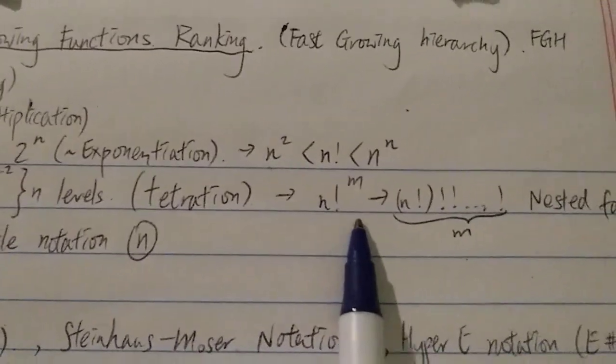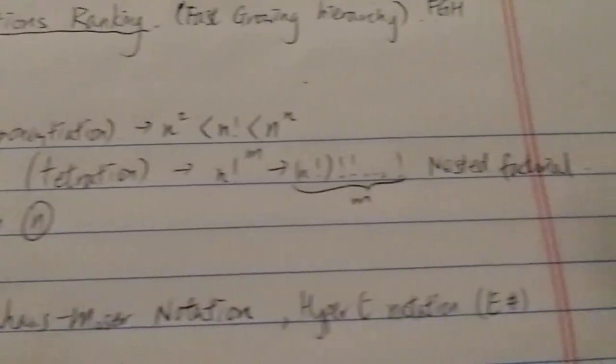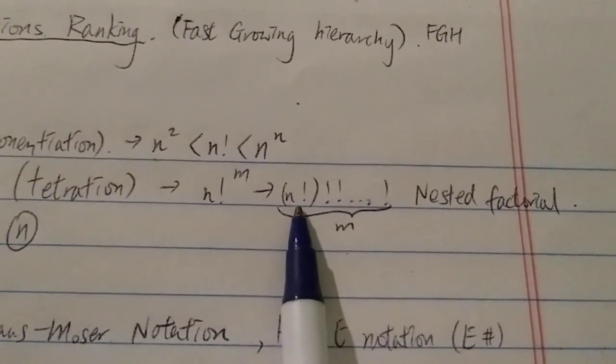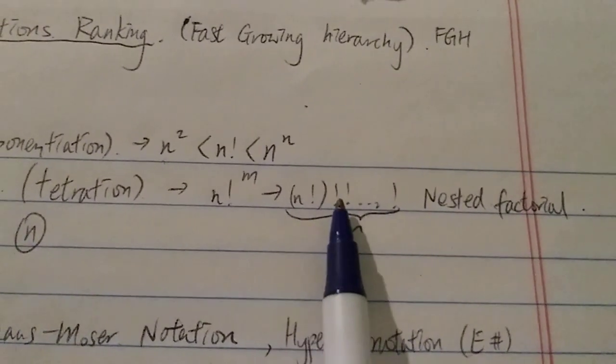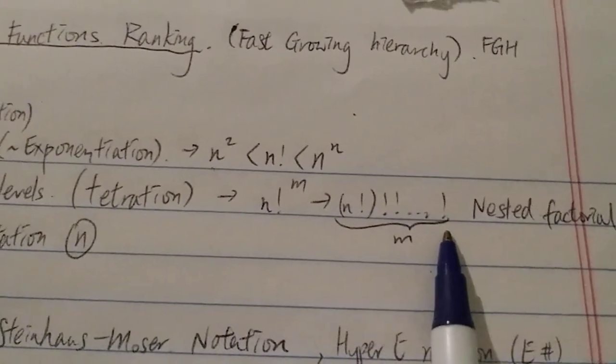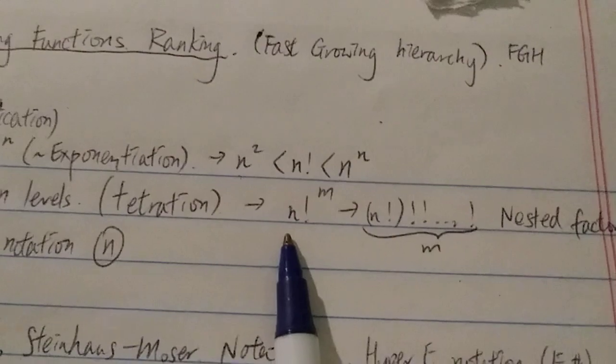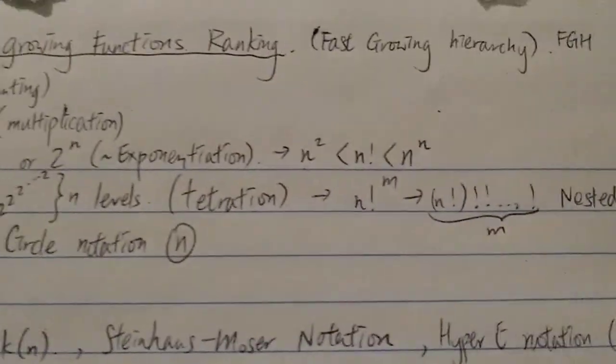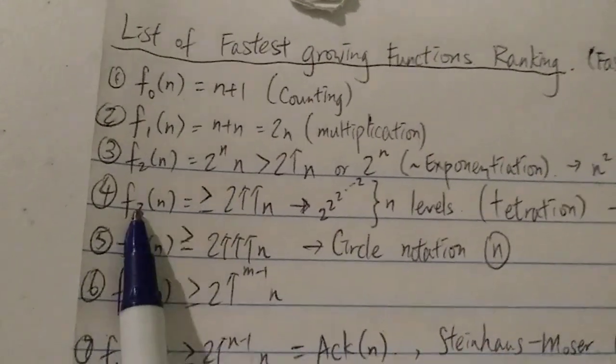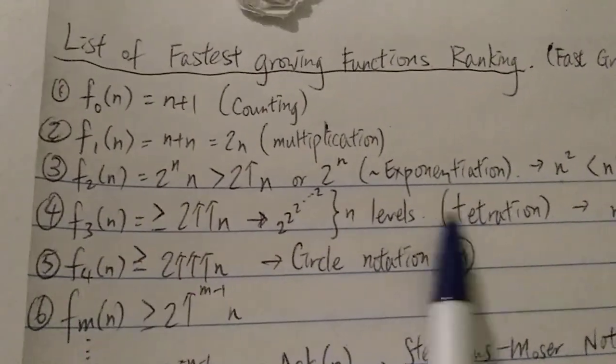And another function which belongs to this group or growth rate is the nested factorial, which is basically n factorial, factorial, factorial, factorial, factorial, with m number of factorials. Another way to write that will be n!^m. And this nested factorial grows similar to F3(n) or tetration.